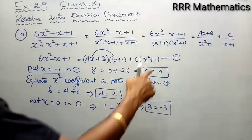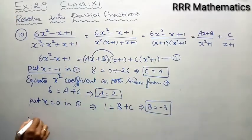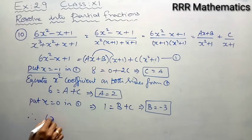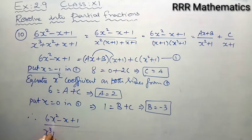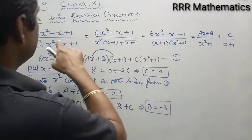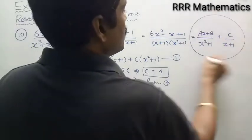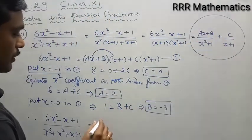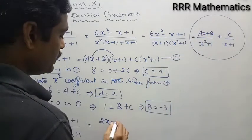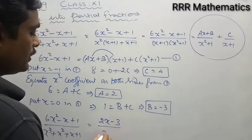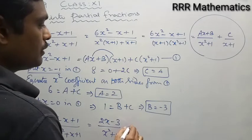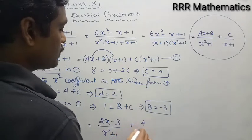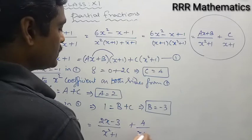Now I have the values: a = 2, b = -3, c = 4. Substituting back into the given fraction: (6x²-x+1)/(x³+x²+x+1) = (2x-3)/(x²+1) + 4/(x+1). That's the final answer.